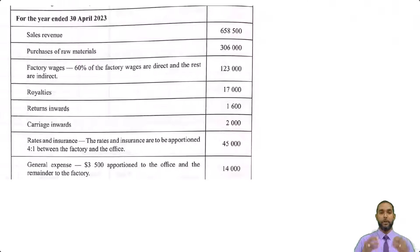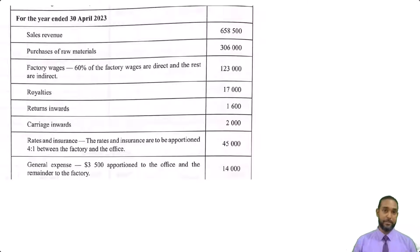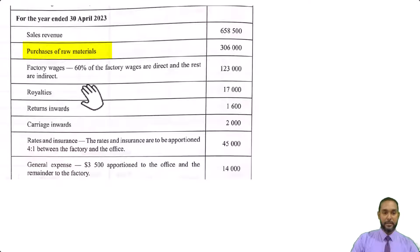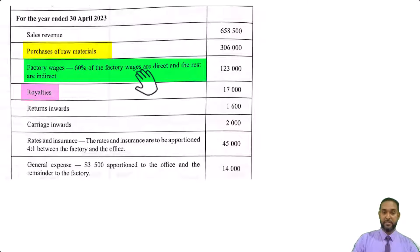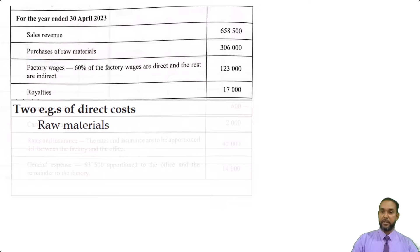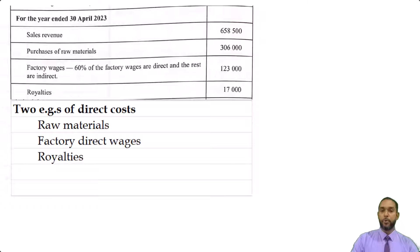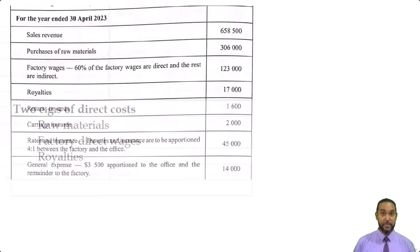If you need a tutorial on manufacturing accounts and direct versus indirect costs, I'm going to put a card up there and a link in the description. Direct costs, as we know, are basically direct materials, direct labor, and some other direct costs. They only asked for two, so we have raw materials and factory wages — 60% of the factory wages are direct. We also listed royalties. Royalties are amounts paid to the owner of the intellectual property and are considered direct because without those payments, you would not be able to even produce the item, much less sell it.